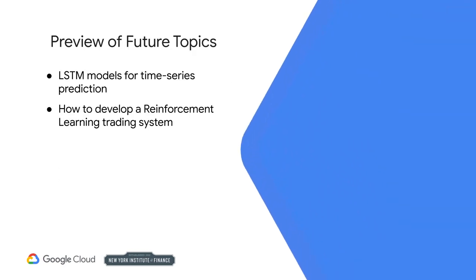So what's next? In the next course, Reinforcement Learning for Trading Strategies, you'll dive into building models with TensorFlow and Keras. One of the specific model types is LSTM, or long short-term memory models, for better time series prediction. You'll then look at how reinforcement learning techniques can be used to develop a nearly autonomous trading system. Don't forget to review the course resources to access and download the slides for the modules you've just completed, and we'll see you in the next course.